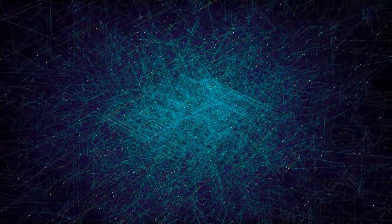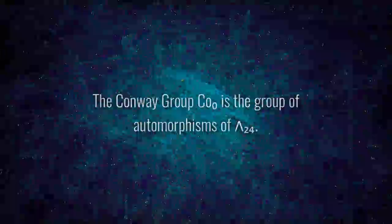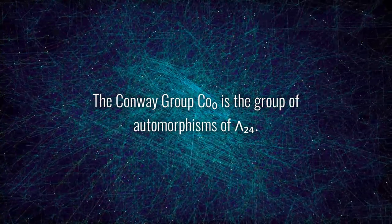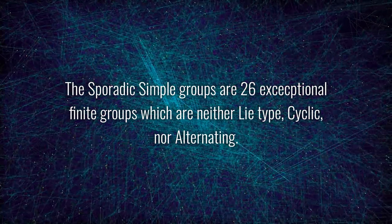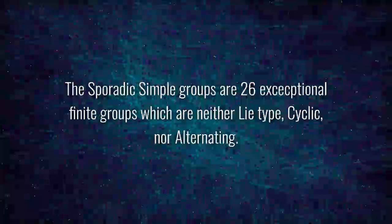This is particularly bizarre because the automorphism group of the Leach lattice is one of Conway's Sporadic simple groups. And normally Sporadic simple groups are incredibly difficult to define explicitly. This is by far the simplest way of explicitly constructing a Sporadic simple group that I know of.